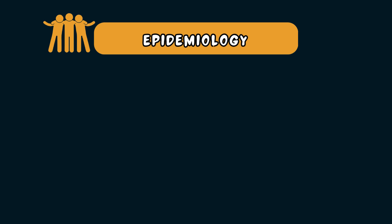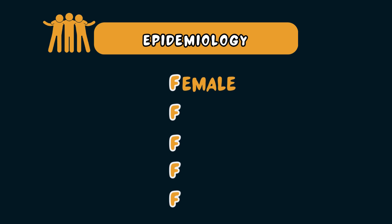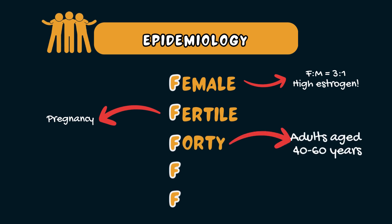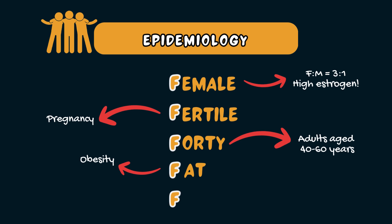The classic risk factors for acute cholecystitis can be remembered using the 5Fs. Females are three times more likely to develop gallstones and cholecystitis, likely due to estrogen, which increases the amount of cholesterol in bile, leading to the formation of gallstones. Fertile — women of reproductive age and pregnant women are at a higher risk. Forty — adults aged 40 to 60 years are the most common age group. Fat — obesity can lead to higher levels of cholesterol in the bile, making it more likely to form gallstones. Interestingly, rapid weight loss, especially with very low calorie diets, can also increase the risk of gallstone formation by increasing the secretion of cholesterol into bile as the body metabolizes stored fat.